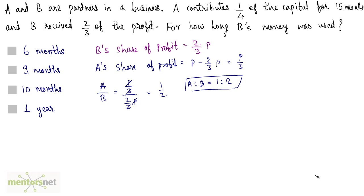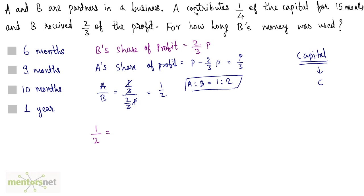We have this crucial information. Let the capital of this business be C rupees. A contributes 1 fourth of that capital for 15 months. The ratio of the profit shares of A and B is 1 by 2, and we know the formula for this. The share of profit equals the compounded ratio of the investments and the time periods. So 1 by 2 equals the investment done by A, which is 1 fourth of capital C, times the time period of 15 months.